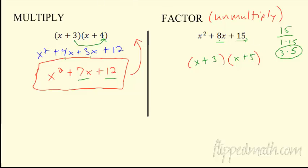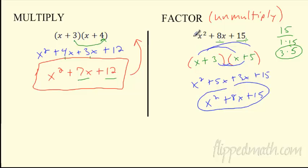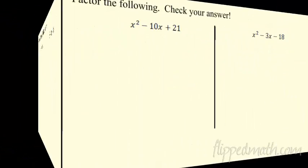Isn't that crazy? Let's check it — double distribute: x times x is x², x times 5 is 5x, 3 times x is 3x, 3 times 5 is 15. And there it is: x²+8x+15. It definitely works. I was able to take this thing and factor it into two binomials. That's the whole section.